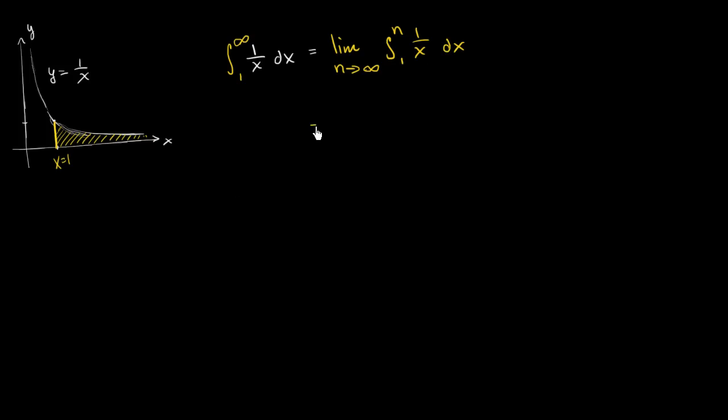which we can write as the limit as n approaches infinity of the antiderivative of 1 over x, which is the natural log of the absolute value of x. So this is the natural log of the absolute value of x. The absolute value won't really matter since we're dealing with positive values of x, but I'll write it as the natural log of the absolute value of x between x equals 1 and x equals n. And so this is equal to the limit as n approaches infinity of...